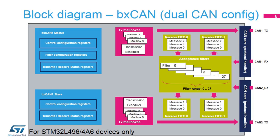This simplified block diagram of the BX CAN in dual CAN configuration shows the shared 28 acceptance filters between the two BX CAN modules. The user can assign each filter to either FIFO 0 or FIFO 1, and configure each filter for identifier mask or list mode. Note that this dual CAN configuration is only available for STM32L496 and A6 devices.